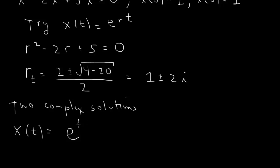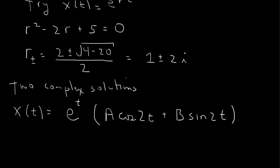So e to the t times a constant times cosine 2, this 2 times t, plus another constant times sine 2t. That's the general solution for the case of complex conjugate roots of the characteristic equation.